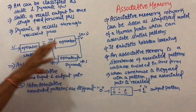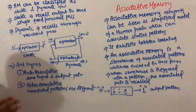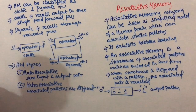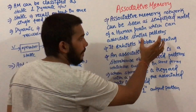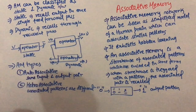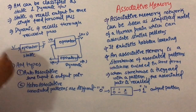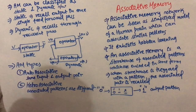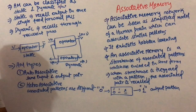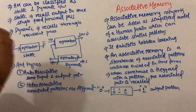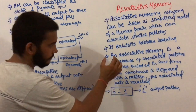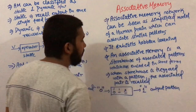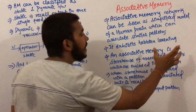Associative memory takes one input pattern and produces similar patterns corresponding to it. It exhibits Hebbian learning — this associative memory network exhibits Hebbian learning. We have talked about Hebbian learning: when there is a change in the synaptic gap, our learning rate is improved.